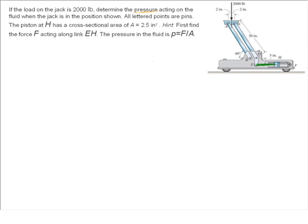So two-force member, and we need to find that force E-H. And once we find that, in order to find the pressure inside here, we're just going to take that force and divide by the area of the piston, which is 2.5 square inches. So really, if we find F-E-H, we're home free.